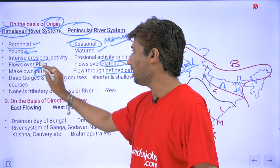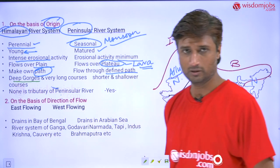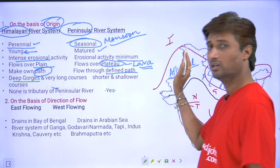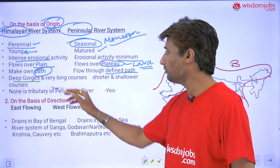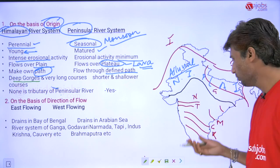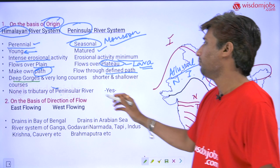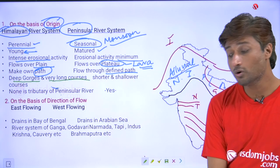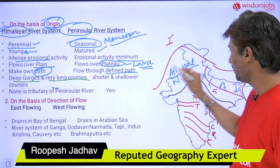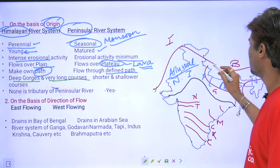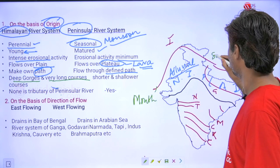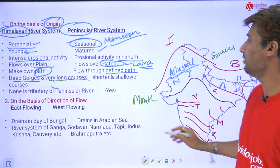Since Himalayan rivers are young and have intense erosional activity, they form deep gorges. Deep gorges are found in all major Himalayan river systems like the Indus, Jhelam, and Chenab. Peninsular rivers generally do not form gorges, though for short stretches of 10 to 20 kilometers, gorges are found in the Godavari. Himalayan rivers flow through very long courses — around 1900 to 2500 kilometers from their source to the mouth, where they meet the sea.